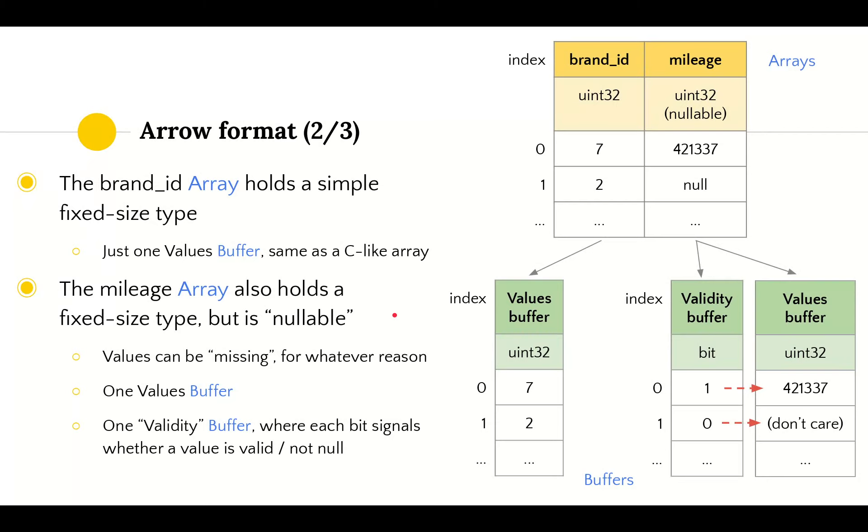We'll go into that on the next couple slides. Let's first look at the first two Arrow arrays. The first Arrow array for the brand identifier holds a fixed-size primitive, a 32-bit unsigned integer. Arrow lays this out as only one buffer, similar or exactly the same as a C-like array. This is a values buffer since it just holds elementary values of the dataset.